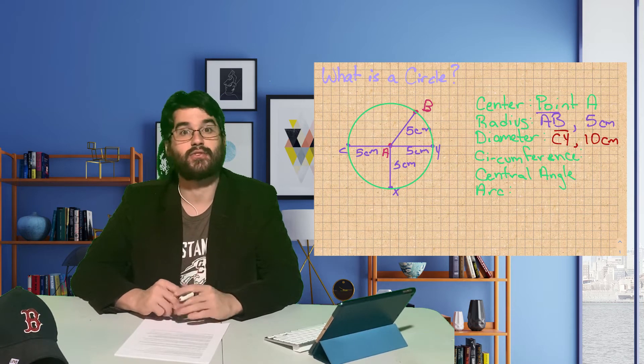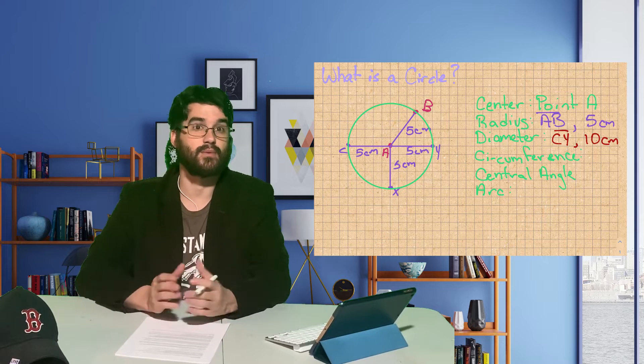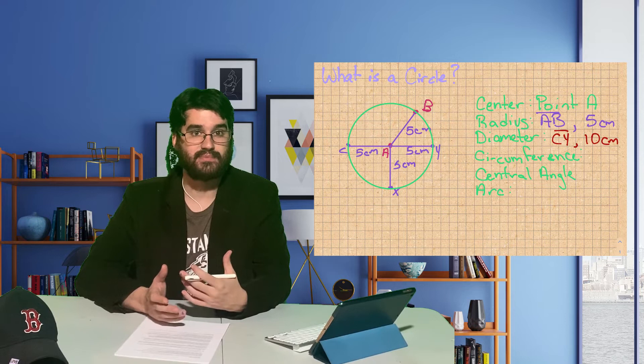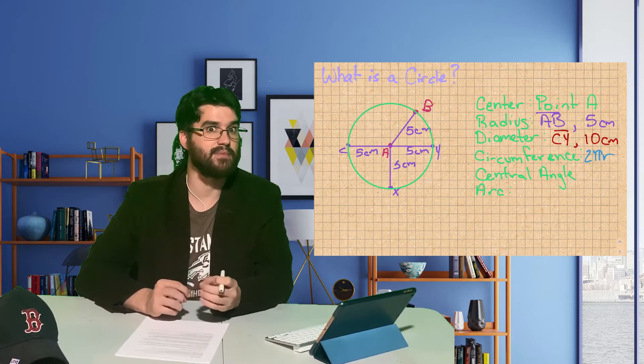The circumference of a circle is like its perimeter. It's the total distance around. However, because we don't have sides to add up, that means we have to use the formula 2πr, or π times the diameter.